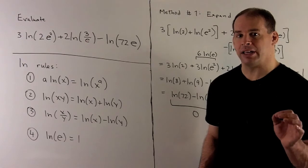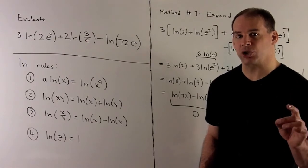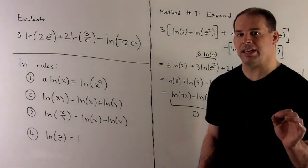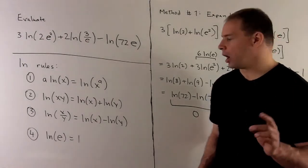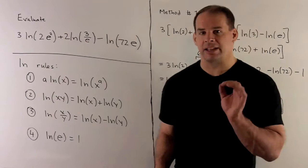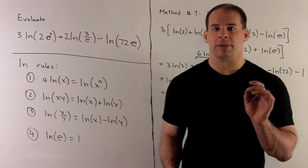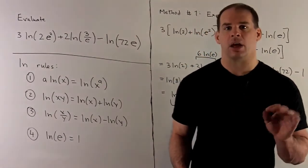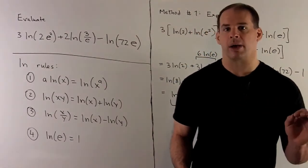Finally, natural log of e is equal to 1. So if we take any logarithm and put the base in, a 1 comes out.